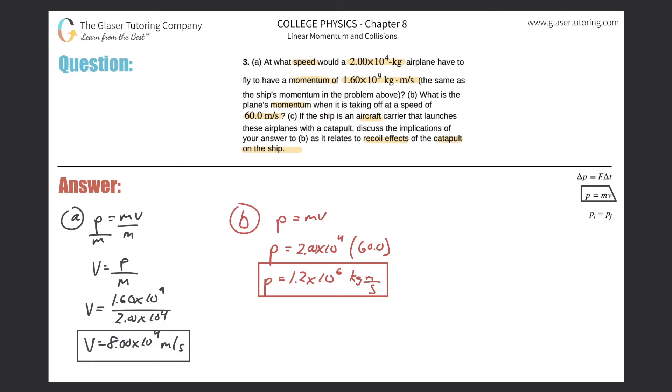So basically, momentum is conserved. What that means is that if the momentum of the airplane goes from zero, because it's not moving, to then 60 meters per second, it will obtain a final momentum of this value we just calculated. Similar to energy, that momentum has to come from somewhere.